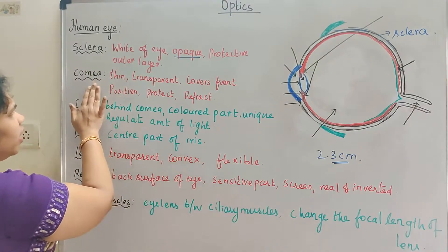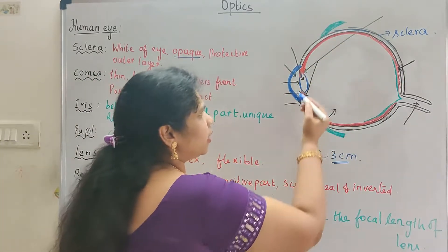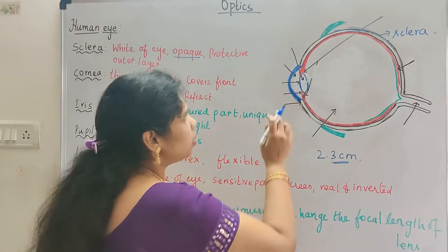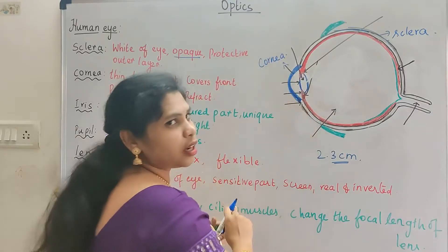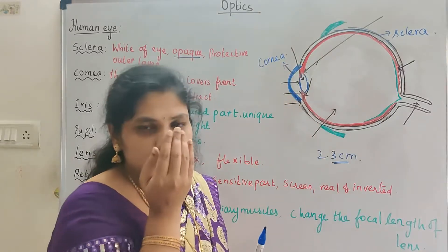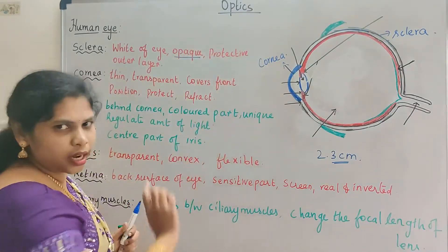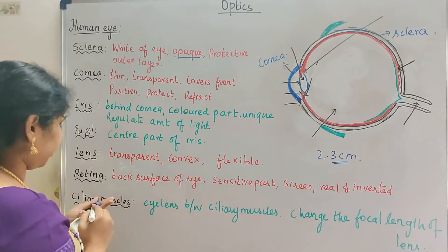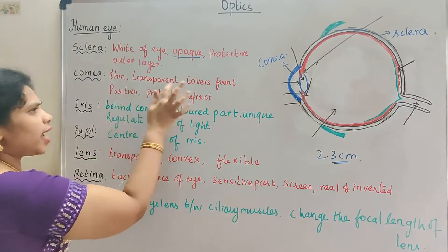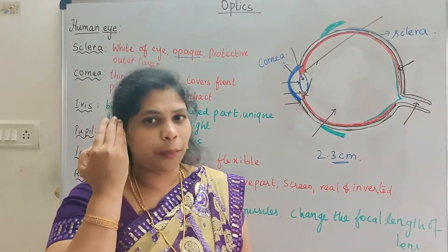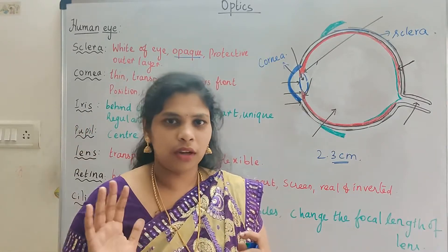So the next layer is the cornea. The cornea continues on with the sclera. This part is the cornea — it continues on with the sclera. So what we say is: the cornea is thin and it is very thin and transparent.